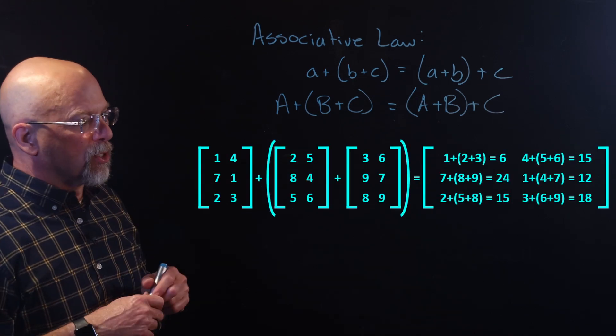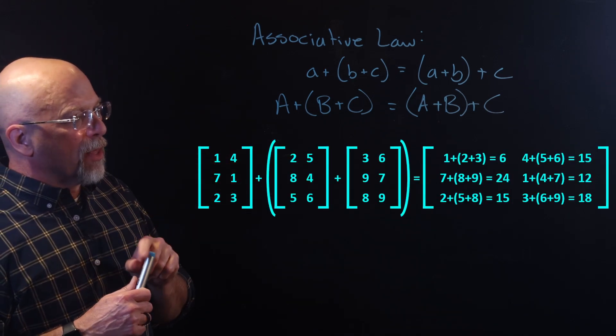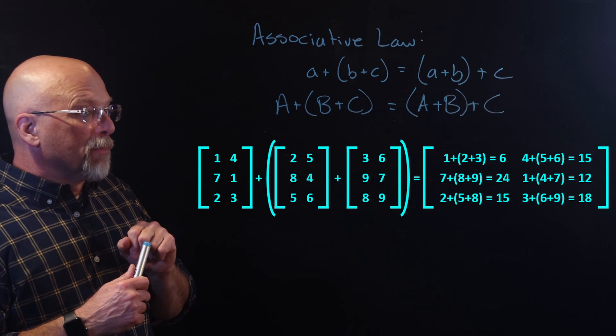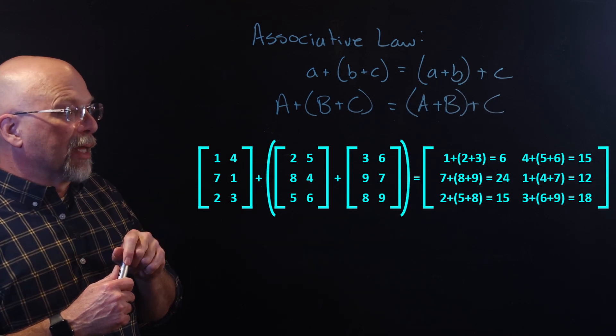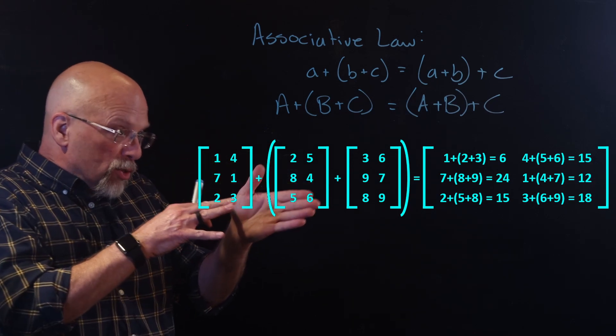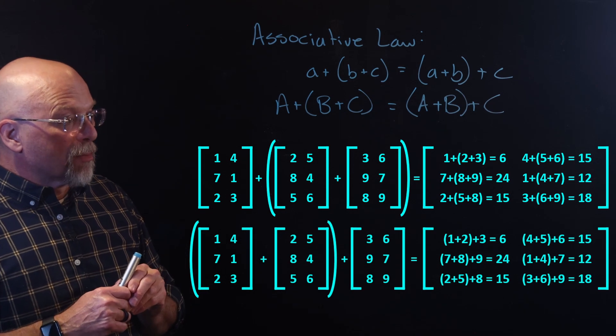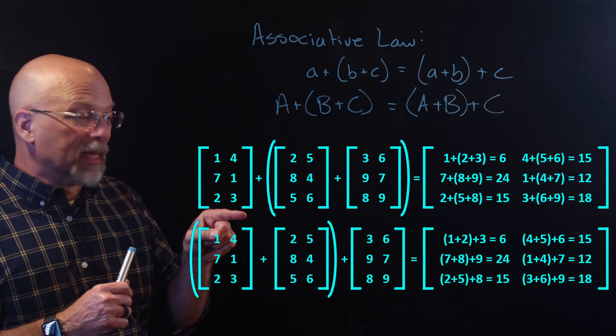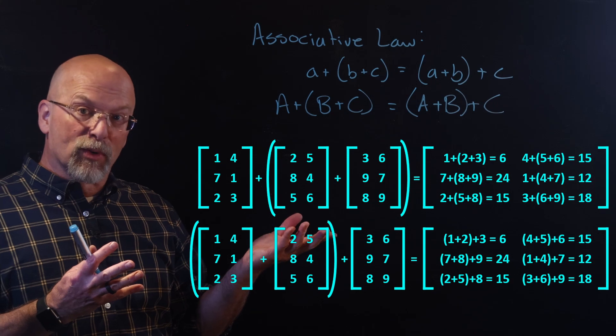So let's take a look at this example again. I've got three matrices. If I add the three of them together, first adding B and C together, then adding A, I get one result. If I do exactly the same thing, adding A and B together first and then adding C, I get exactly the same result.